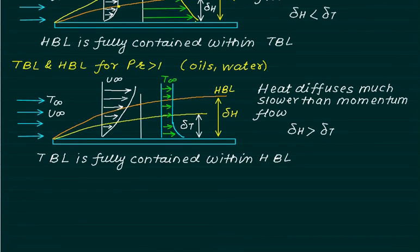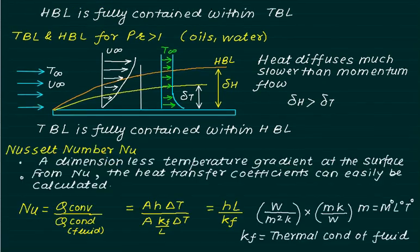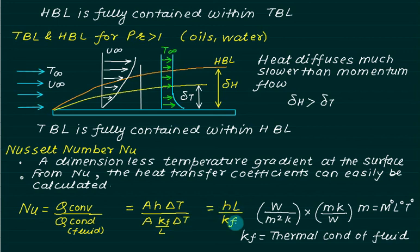We now introduce the Nusselt number Nu, which is a dimensionless temperature gradient at the surface. From the Nusselt number we can find the heat transfer coefficient. It is defined as the ratio of convection heat transfer (A times h times delta-T) to conduction heat transfer near the wall (A times Kf divided by L times delta-T), giving Nu equals h times L divided by Kf, which is dimensionless.